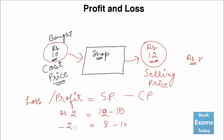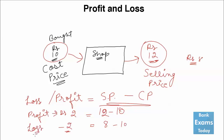Whenever there is a negative sign in the formula, there will be a loss. In case of profit the outcome is positive — selling price minus cost price gives a positive result. In case of loss, when we deduct cost price from the selling price, the outcome will be negative, so there will be a loss.